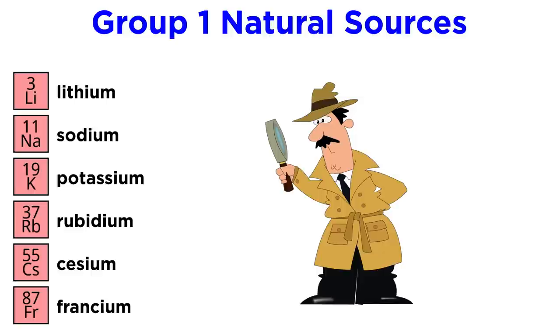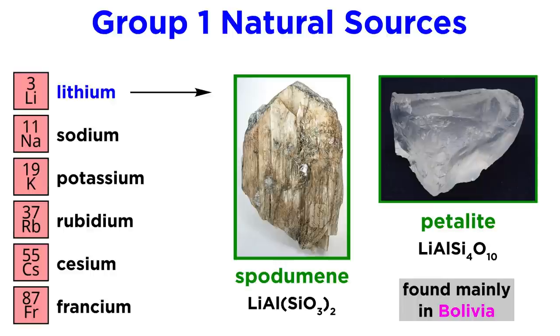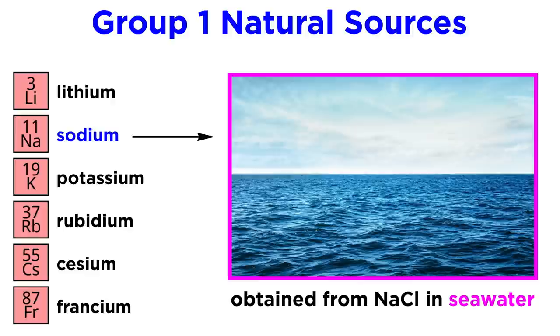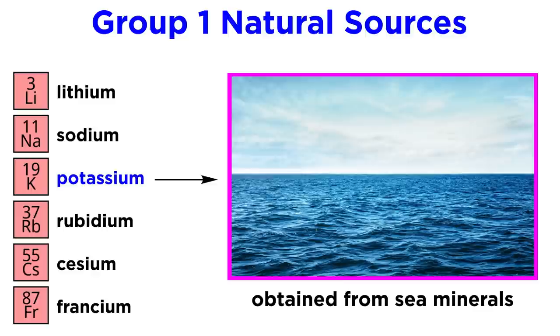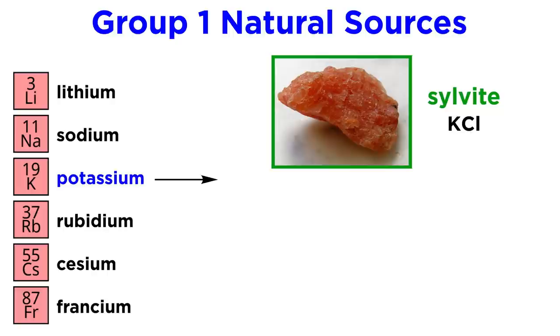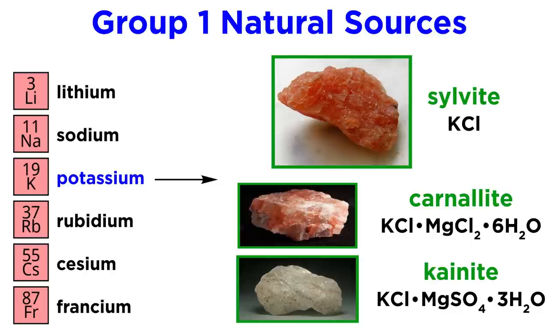So where can we find these elements? What are their natural sources? Lithium is derived from ores like spodumene and petalite, which have the formulas given. Commercial deposits are rare and found mainly in Bolivia. Sodium is obtained from sodium chloride in seawater. The seawater evaporates and produces halite deposits. Potassium is obtained in a similar manner, from minerals in seawater that has evaporated. These minerals include silvite, which is potassium chloride, as well as carnalite and canite, which are hydrates with these structures.